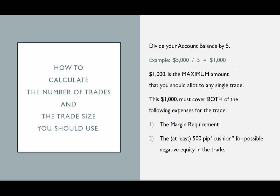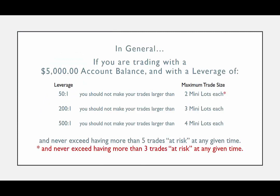To calculate the number of trades that you should take in your account, use the following formula: divide your account balance by 5. Using an example of an account with $5,000, divide $5,000 by 5 and that tells us that each trade should not be allotted more than $1,000, or 20% of our account balance. The $1,000 for the trade has to accommodate both the margin requirement and at least enough usable margin cushion to let that trade ride potentially 500 pips negative.